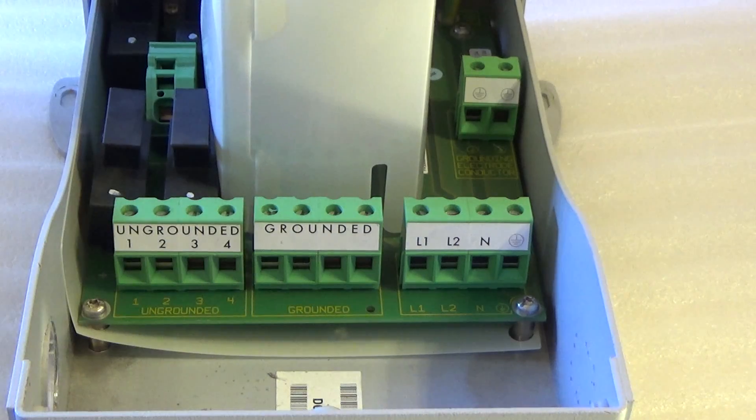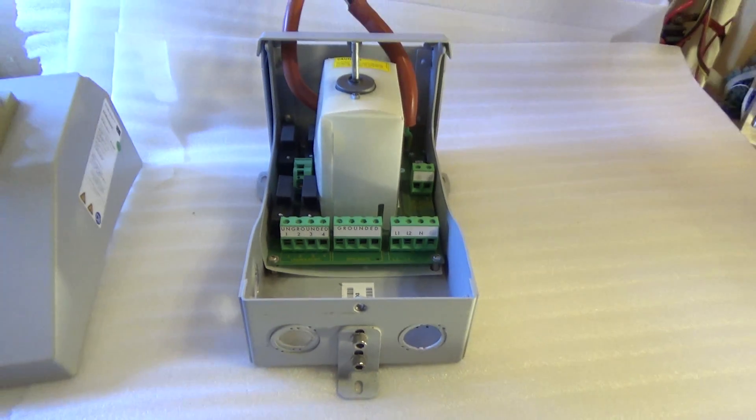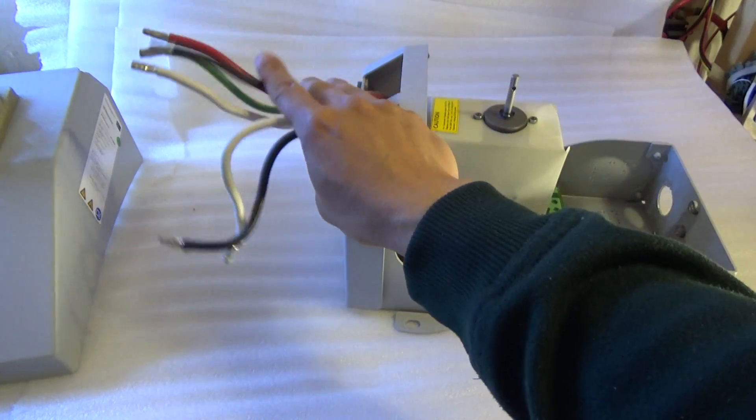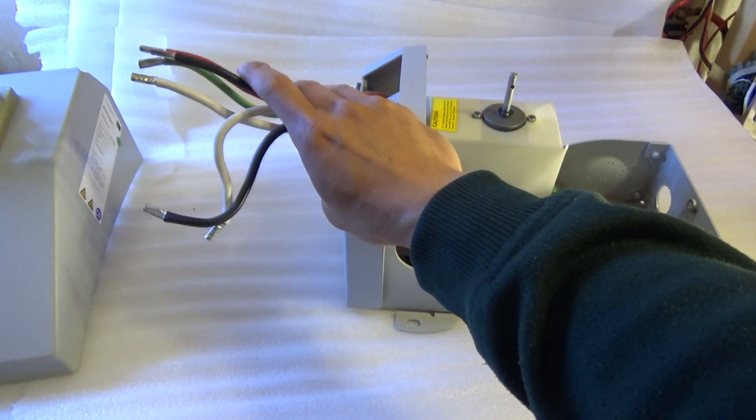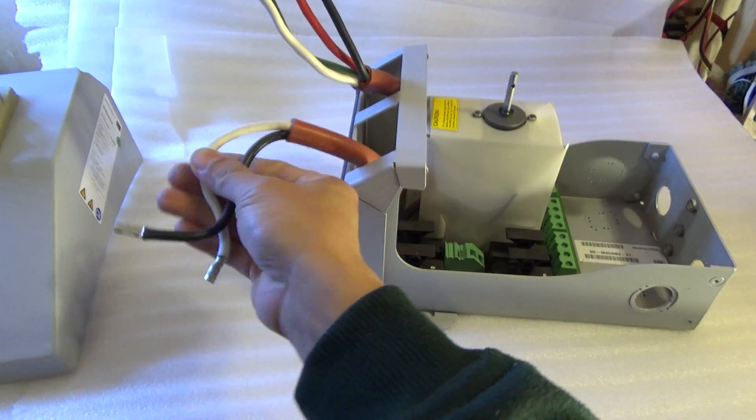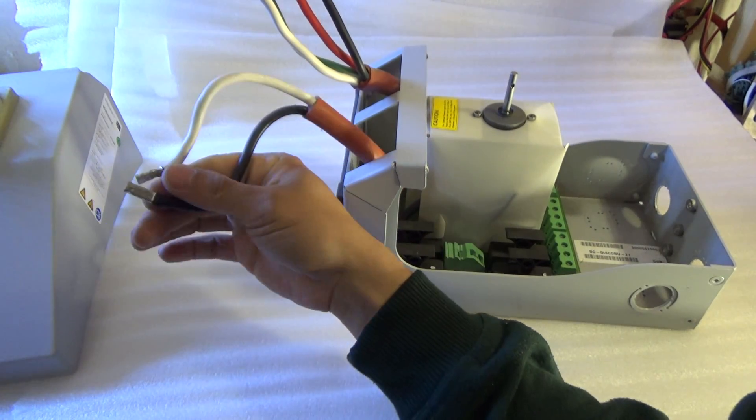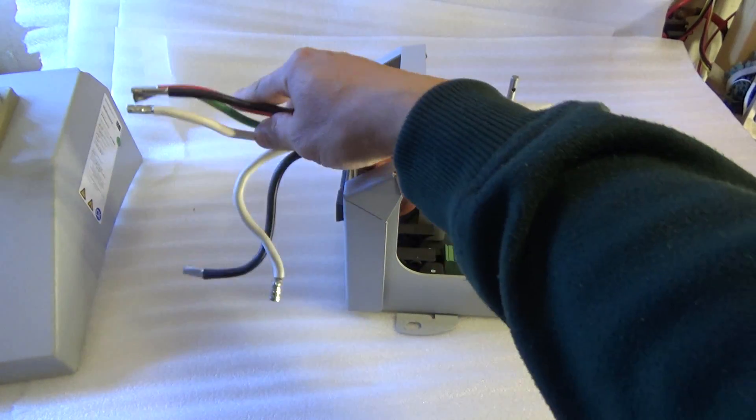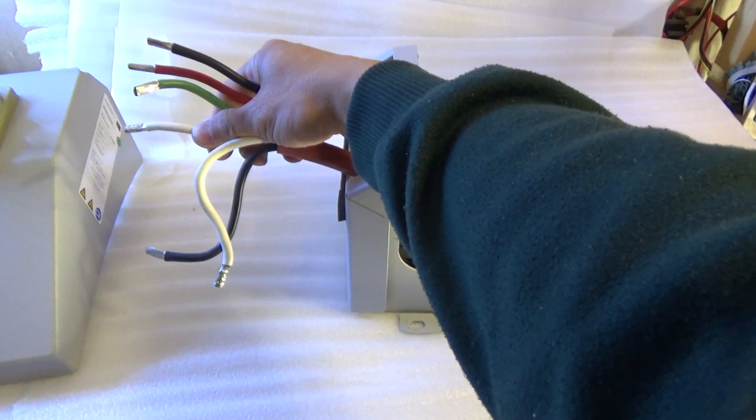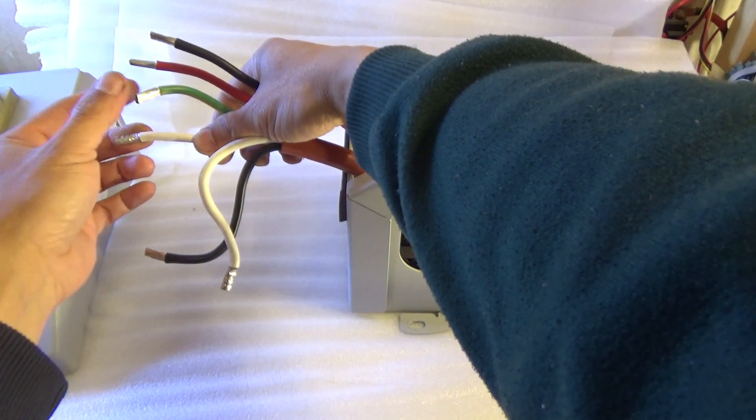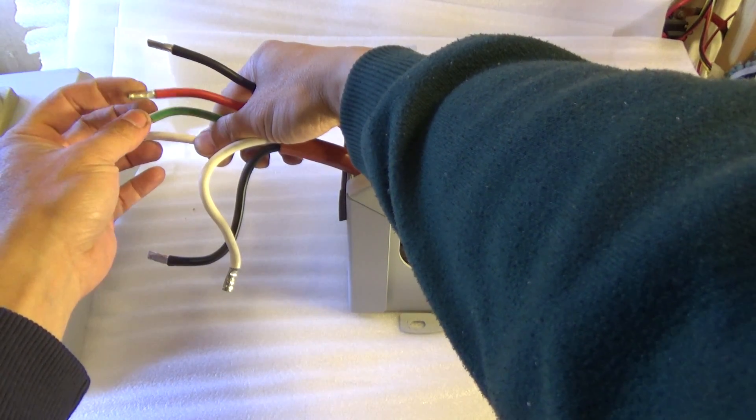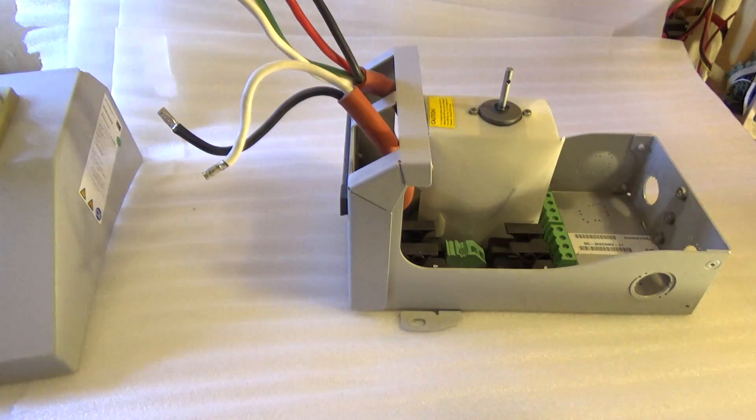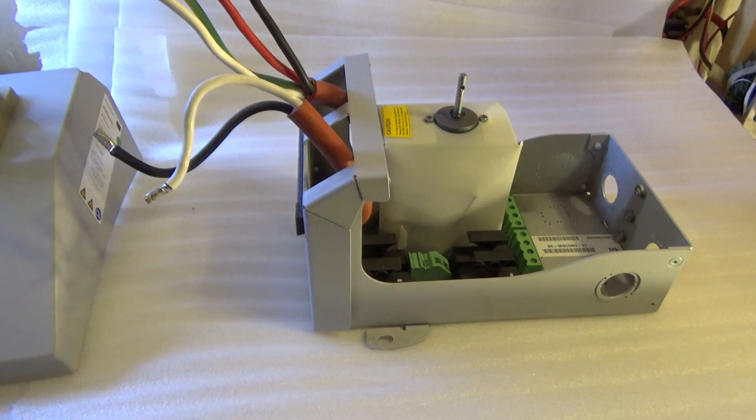On the top of the disconnect, the wires coming out are identical. This is the PV from solar array. And these are the AC. So we got neutral, ground, line one and line two. And that's pretty much it. Pretty straightforward.